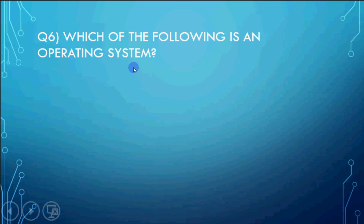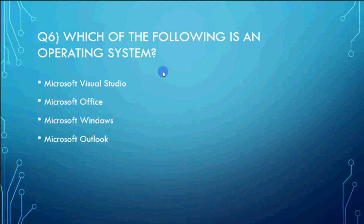Which of the following is an operating system? Microsoft Visual Studio, Microsoft Office, Microsoft Windows, Microsoft Outlook. So obviously easy answer, that's Microsoft Windows is your operating system. Outlook is used to manage your mails. So your operating system - Microsoft Windows.